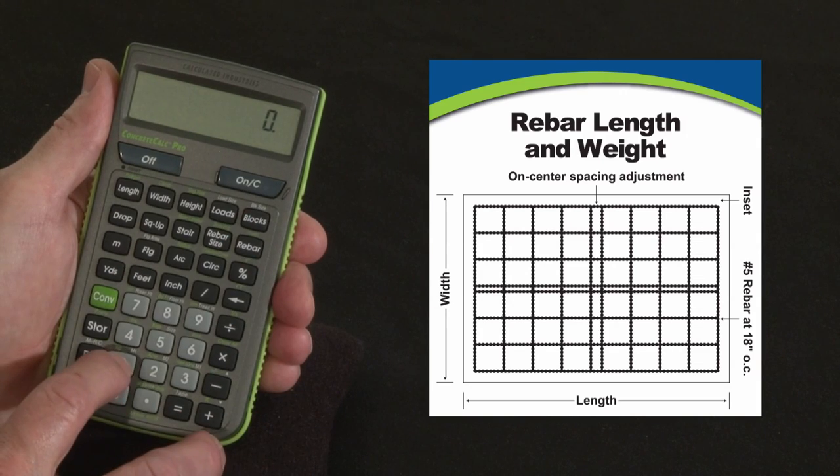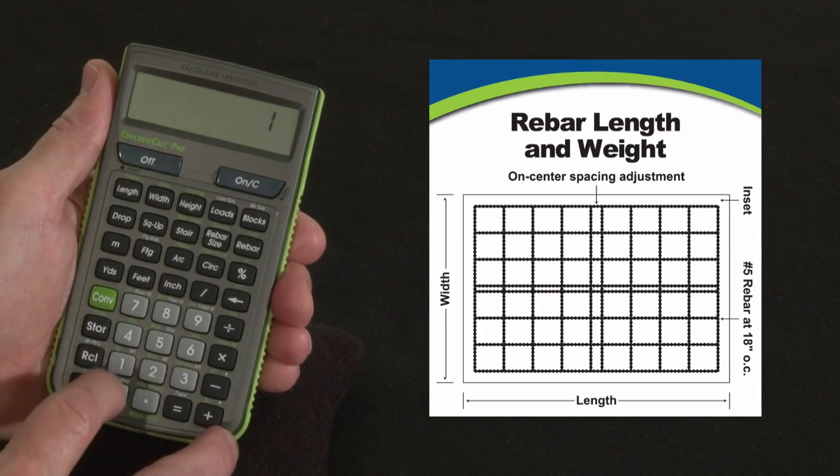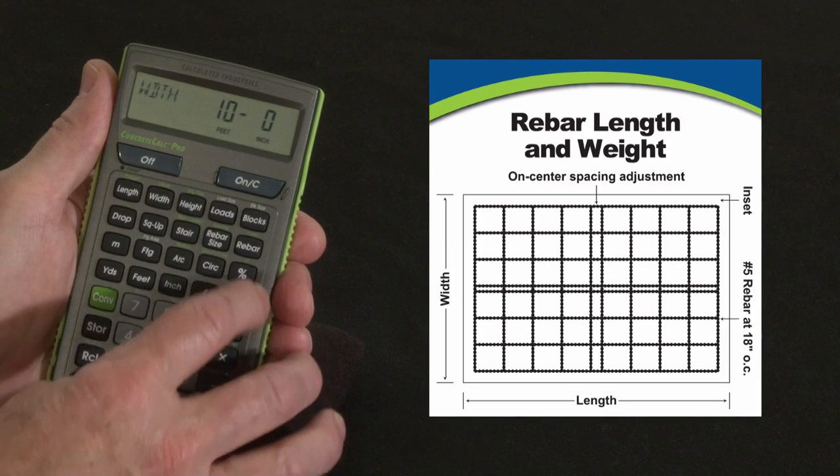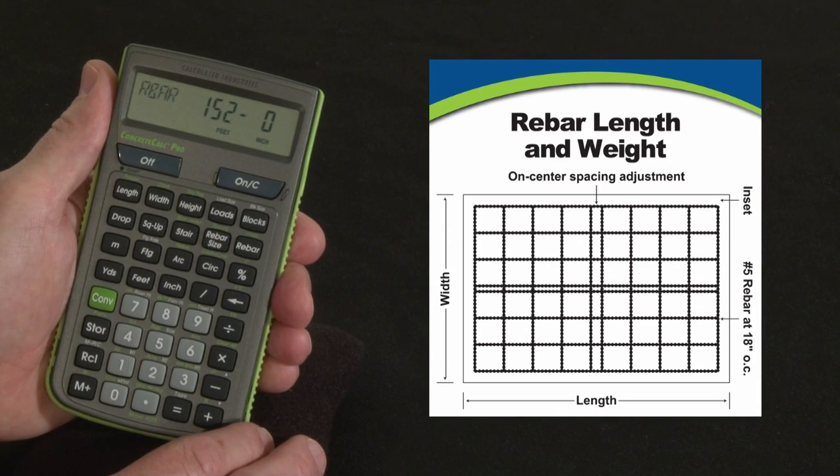So let's put in a simple pad, say 10 feet long and 10 feet wide, hit rebar, and just that quickly we need 152 lineal feet of rebar.